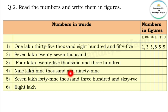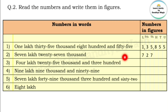Next number is seven lakh twenty seven thousand. Lakhs: seven, so write 7 in the lakhs place. Then twenty seven thousand — two ten-thousands and seven thousands. So write 2 in the ten-thousands place and 7 in the thousands place.